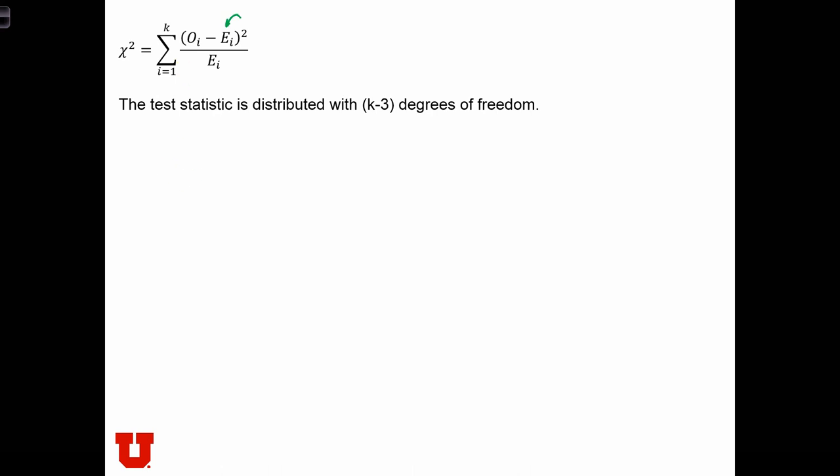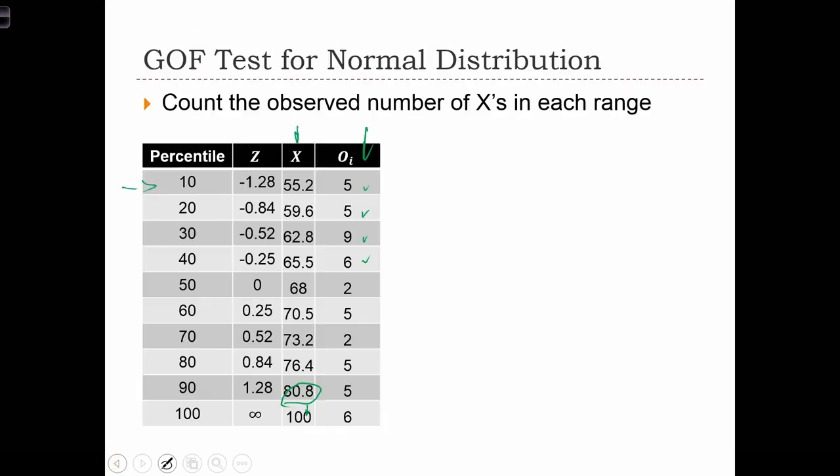So in order to compute this, we have to sub in 5 for ei. ei equals 5 for all of these values, okay?